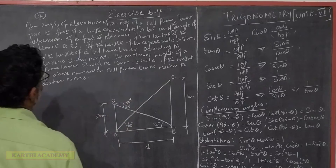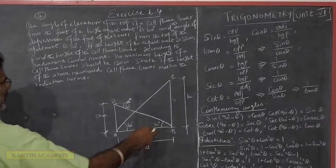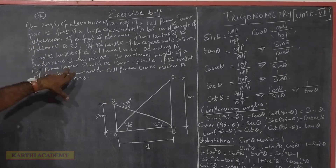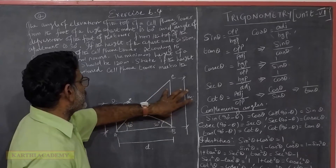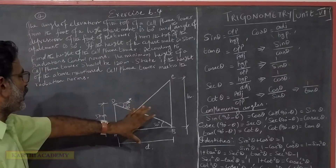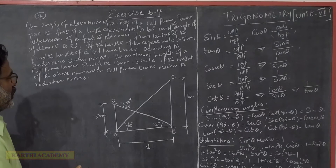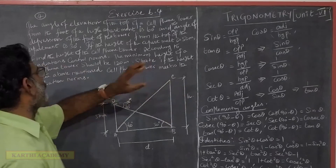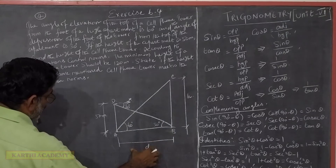The angle of depression is 30 degrees. We are talking about the height of the cell phone tower and the radiation control norms. The limitation of the cell phone tower is 120 meters — that is the minimum height. So this condition and the norm: this tower must satisfy the same. We are talking about the distance and the height.